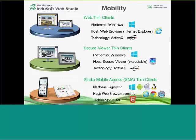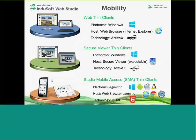A few years ago we came up with Studio Mobile Access — SMA — which uses HTML5 technology to get the screens, get the data, and then view and interact with those screens with security in mind. What's really neat about being HTML5 is that you don't have to install an app on Android, iPad, or iPhone. You just open a standard browser, point to the screens, and you can go into kiosk mode and run full screen. You can have up to 128 of these thin clients simultaneously.